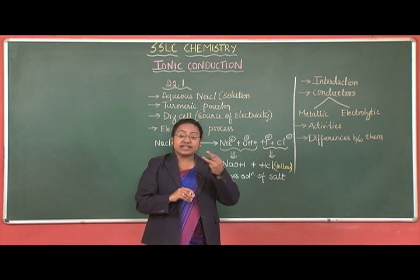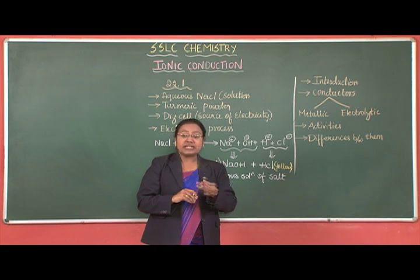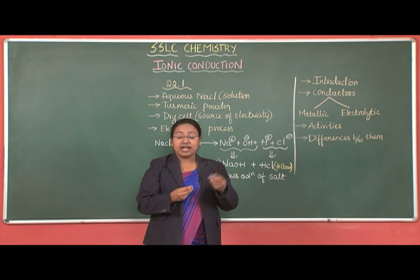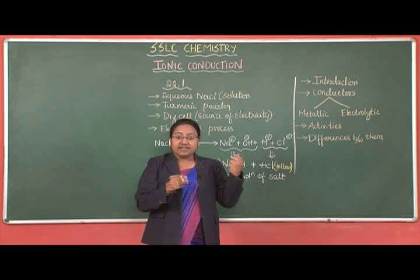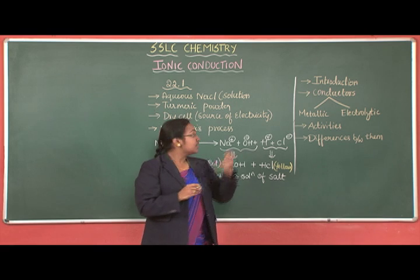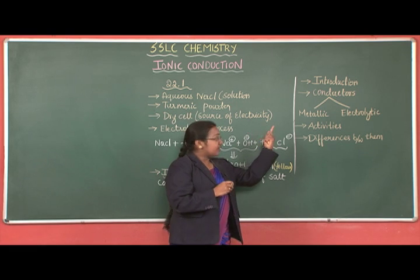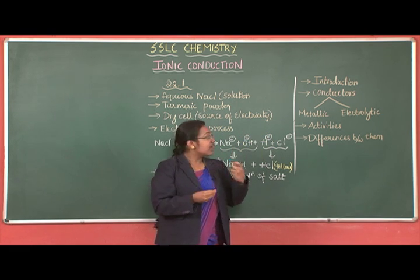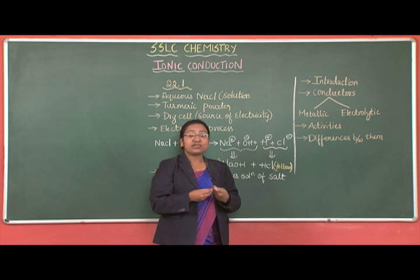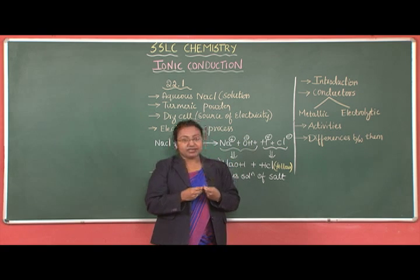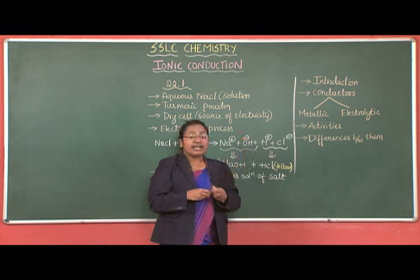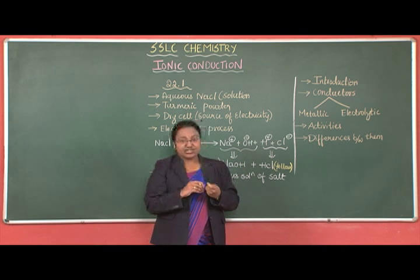Since graphite, a non-metal, also conducts electricity, these conductors are called electronic conductors. Their conductivity is known as metallic conductivity, and the other type is known as electrolytic conductivity — or metallic conduction and electrolytic conduction, respectively.